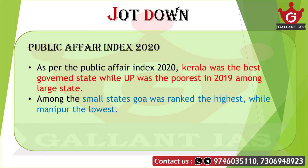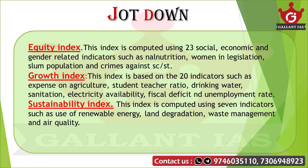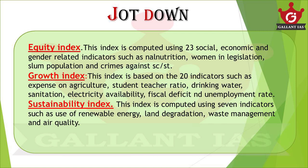Now let's check the three dimensions of development. First is the Equality Index, which is computed using 23 social, economic, and gender-related indicators such as malnutrition, women in legislature, slum population, and crimes against SC and ST. In this category, Andhra Pradesh, Kerala, Chhattisgarh, and West Bengal performed well, while Jharkhand, Bihar, Odisha, and Madhya Pradesh performed very badly.